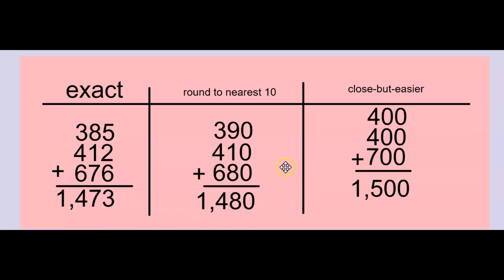Here I chose the strategy to round to the nearest 10. So 385 rounded to 390, 412 rounded to 410, 676 rounded to 680. And when I add those together, I get 1,480.